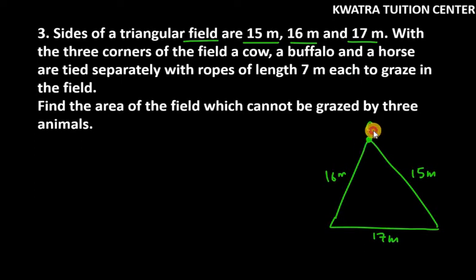So let us take point C here, that means the cow is here at one corner of the triangle and they are tied by a rope of length 7 meter. This means how much of a sector can be made? 7 meter is a sector here and they have told us that the other end is a buffalo. Here is our sector, again 7 meter.